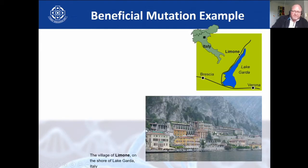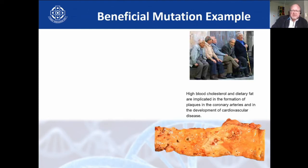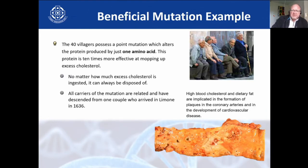Here's a beneficial example: in a little town called Limone in Italy, they were isolated for years and years. There was a mutation and these people are basically resistant or very tolerant to high cholesterol — high blood cholesterol is no problem for them. It was actually just one amino acid that was changed.